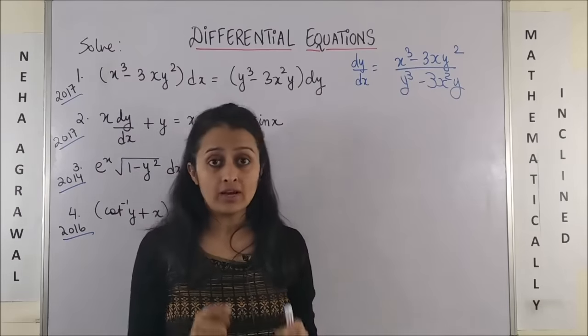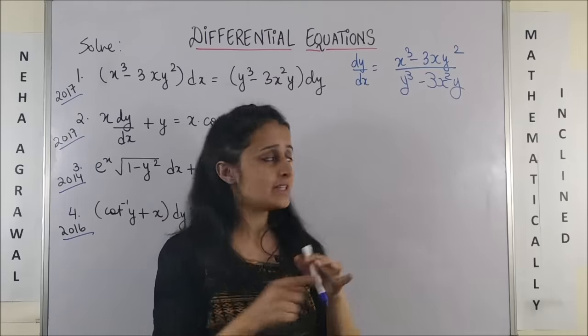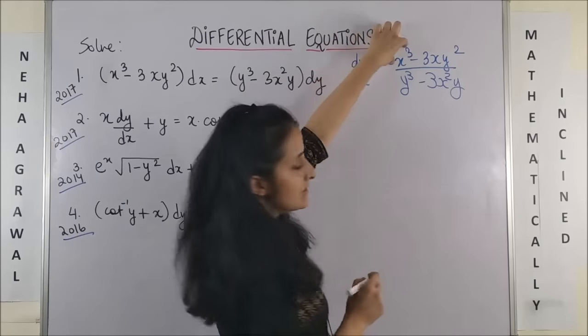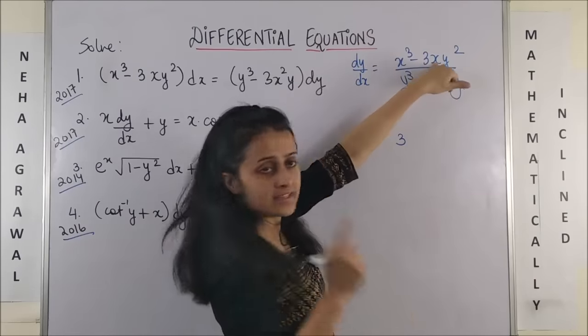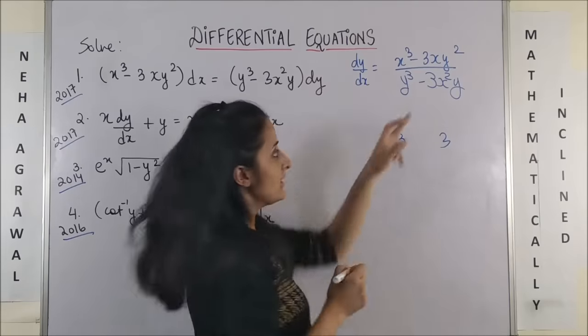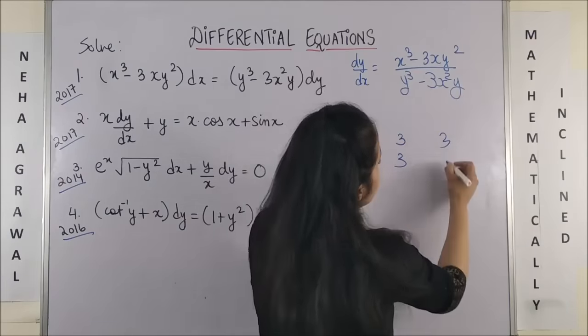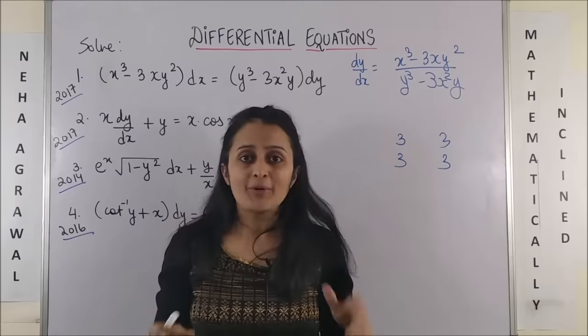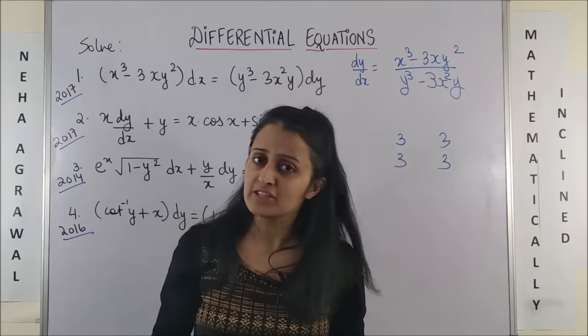This is the equation. Now, as I told you, first check: Is it homogeneous? So, this means look at this term. X cube means degree 3. Look at this term. X has degree 1, Y has degree 2. Add it together, degree 3. Y cube degree 3. 3x square y degree 3. Bingo! All are degree 3. That means this is a homogeneous differential equation.